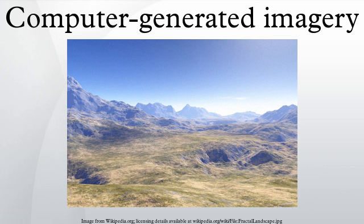The visual scenes may be dynamic or static, though the term CGI is most commonly used to refer to 3D computer graphics used for creating scenes or special effects in films and television. The term computer animation refers to dynamic CGI rendered as a movie, while the term virtual world refers to agent-based, interactive environments.